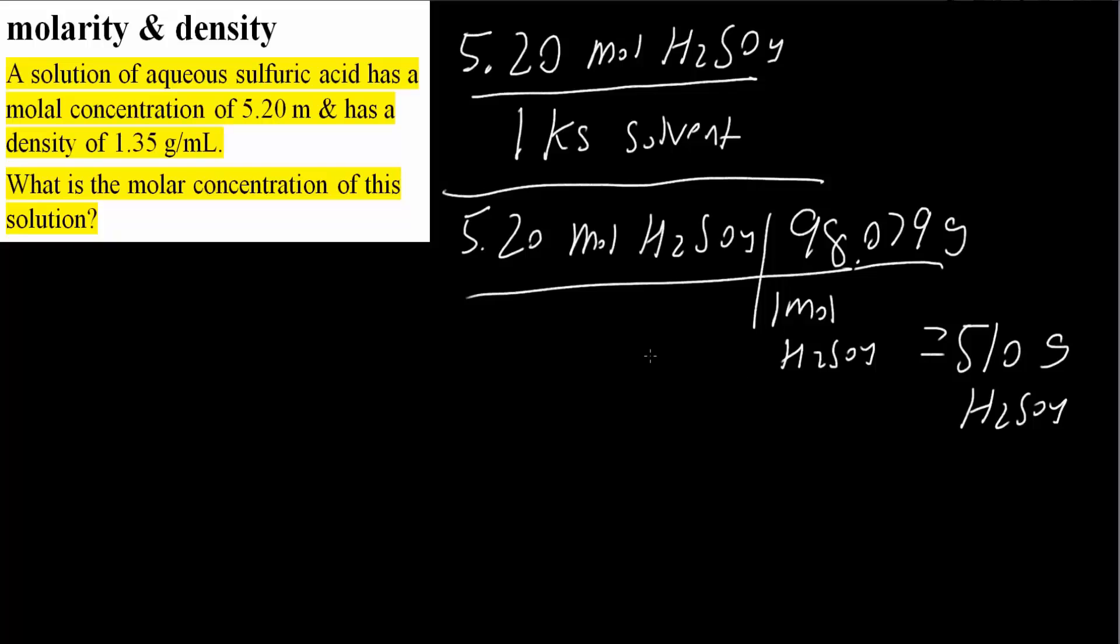From here we want to determine the solution. The solution will be the solvent plus the solute, meaning we have 1000 grams of solvent plus 510 grams of the solute which is H2SO4, so we would get 1510 grams for the solution.